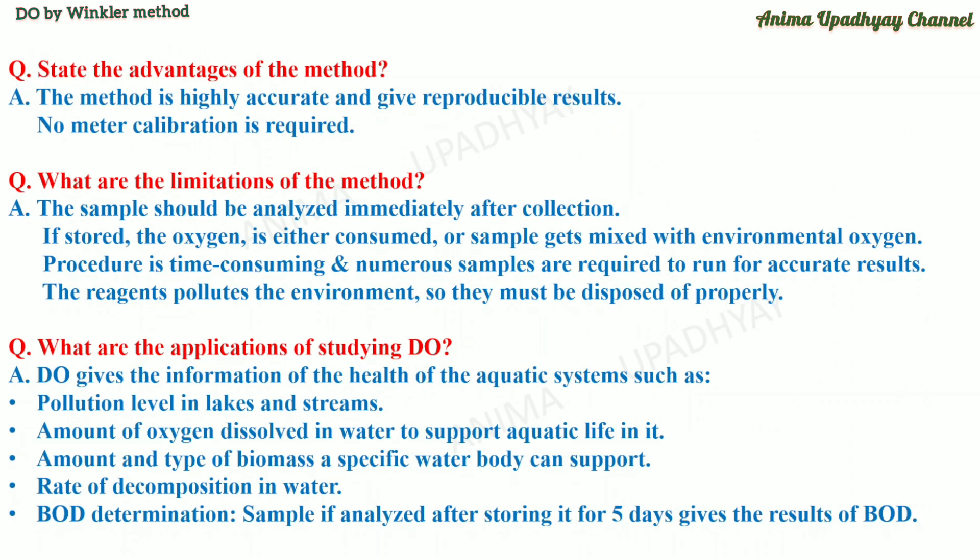What are the advantages of the method? The method is highly accurate and gives reproducible results. No calibration is required because no instrument is used. What are the limitations? The sample should be analyzed immediately after collection, as stored samples may have oxygen consumed or mixed with environmental oxygen. The procedure is time-consuming, and numerous samples must be run simultaneously for accurate results. The reagents used may pollute the environment and must be disposed of properly.